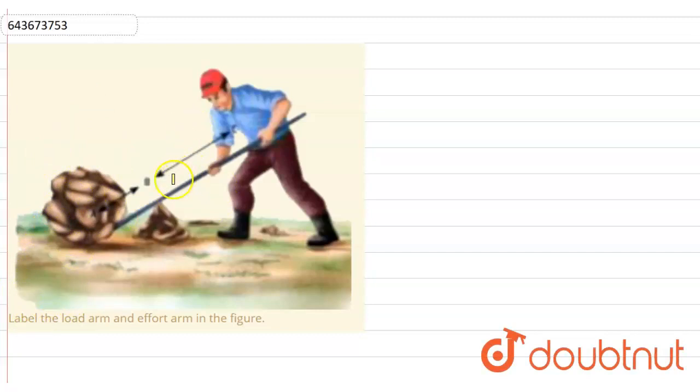We have a figure where a man is using a crowbar and trying to lift this big stone up. The question says: label the load arm and the effort arm in this figure. First of all, we know this is a class one lever.